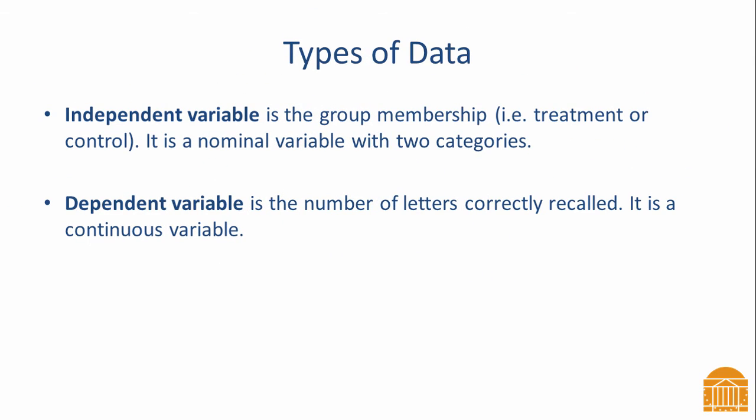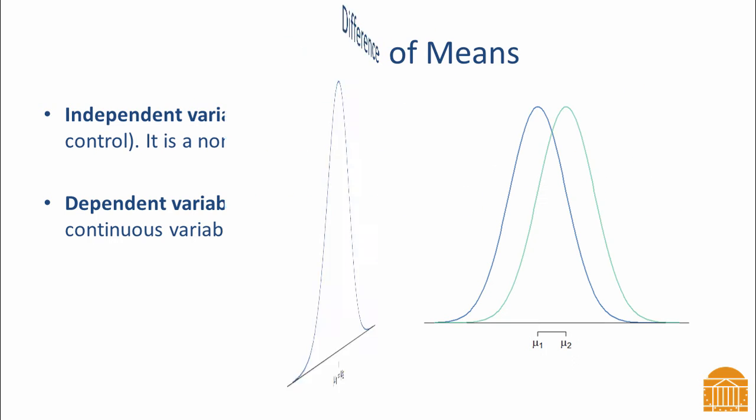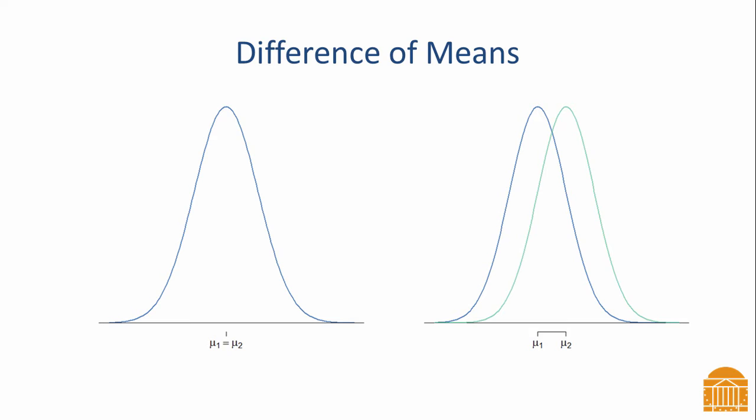In this scenario, we have one independent variable and one dependent variable. The independent variable is group membership. Students participating in the new lesson are in the treatment group, and students receiving traditional instruction are in the control group. The independent variable is a nominal variable with two categories. The dependent variable is the number of letters correctly recalled — it is a continuous variable. The independent samples t-test is appropriate for a design with a continuous dependent variable and a discrete independent variable with two levels. Our main interest is the difference of means for the two groups.